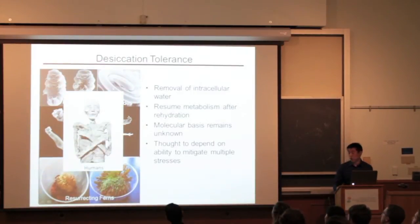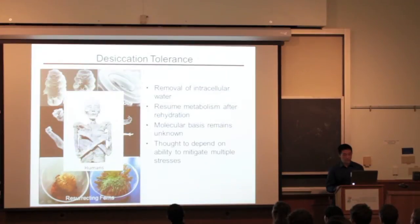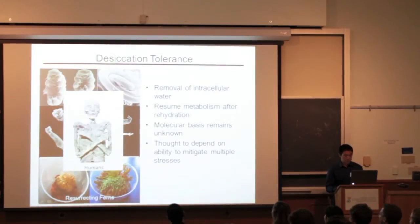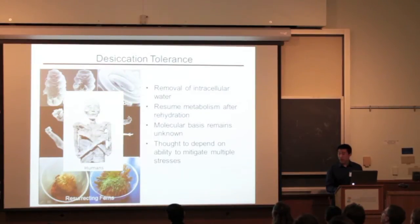Humans, and most organisms, are not desiccation-tolerant. That is what happens to us if we get dried out. The molecular basis for desiccation tolerance remains unknown, but it is believed to depend on the organism's ability to mitigate the consequences of different stresses.